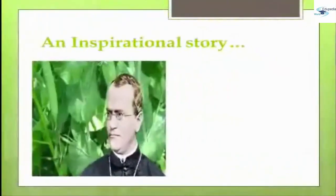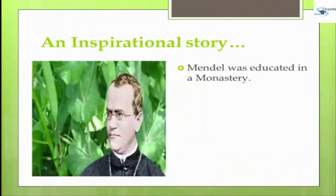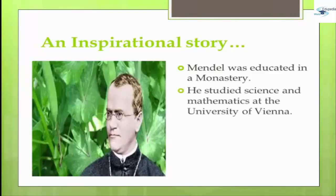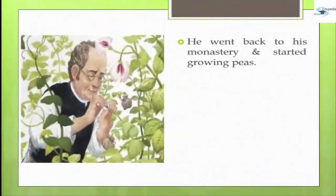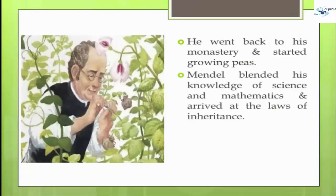Mendel was educated in a monastery and went to study science and mathematics at the University of Vienna. Failure in the examination for a teaching certificate did not suppress his zeal for scientific quest. He went back to his monastery and started growing peas. Many others had studied the inheritance of traits in peas and other organisms, but Mendel blended his knowledge of science and mathematics and arrived at the laws of inheritance.